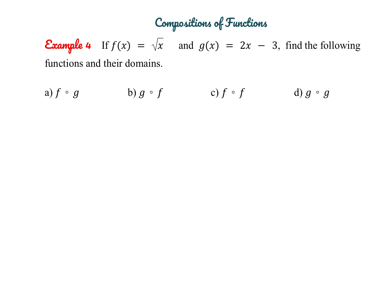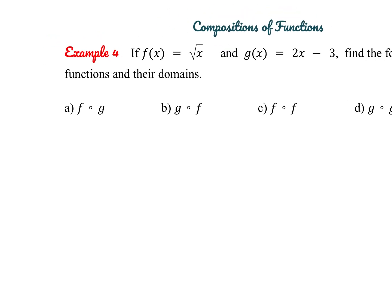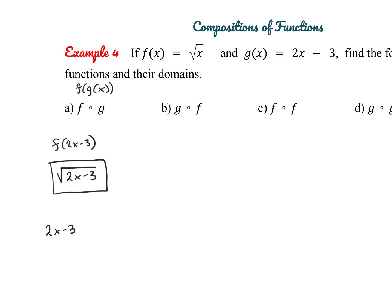The last topic is compositions of functions. Given f of x equals square root of x and g of x equals 2x minus 3, f composed with g means f of g of x — plug g of x into f. So we get the square root of (2x minus 3). The domain requires the radicand to be greater than or equal to 0, giving x greater than or equal to 3 halves, so the domain is [3/2, infinity).